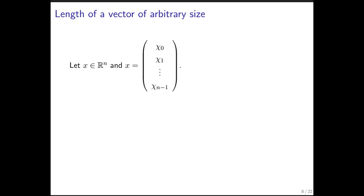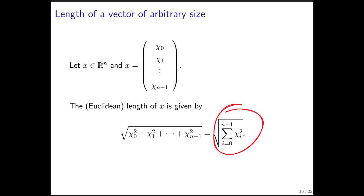If we take that further and look at a vector of size n, then the length of that vector is the square root of the sum of the squares of the components, which we can write in shorthand notation.